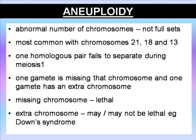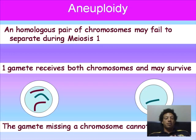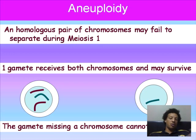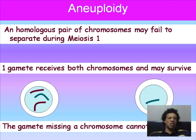Again, with aneuploidy, a homologous pair of chromosomes may fail to separate during meiosis 1. One gamete receives both chromosomes and may survive, while the gamete missing the chromosome cannot. On the left here we have a purple chromosome and a turquoise-green chromosome, and another purple chromosome, and on the right we have just the green chromosome. So that one on the right is missing a purple chromosome, and the one on the left has an additional purple chromosome — that's an example of aneuploidy.